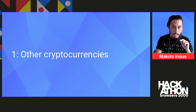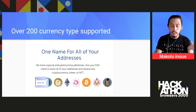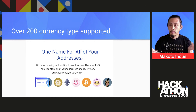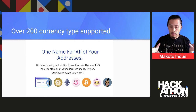Most people's assumption is that ENS can only map into an Ethereum address, but in fact it actually supports over 200 different crypto addresses.